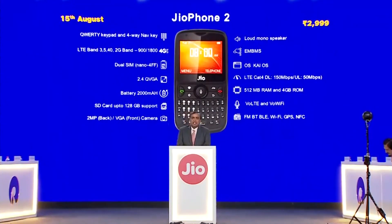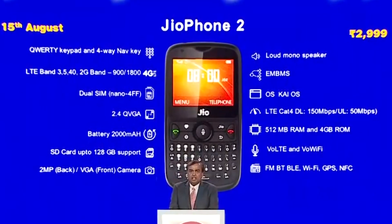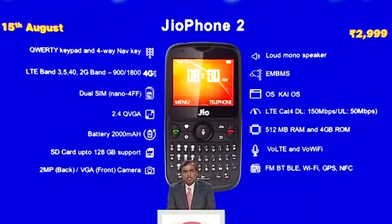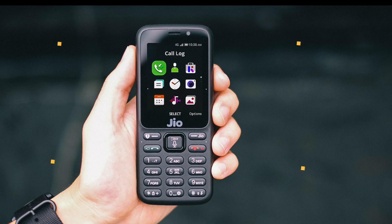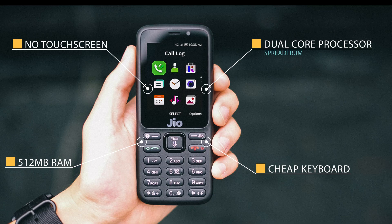The Jio Phone has a Geo Core processor, 512MB RAM, and 4GB storage. These are the previous Jio Phone 2 specs. This device also features a touch screen running KaiOS.